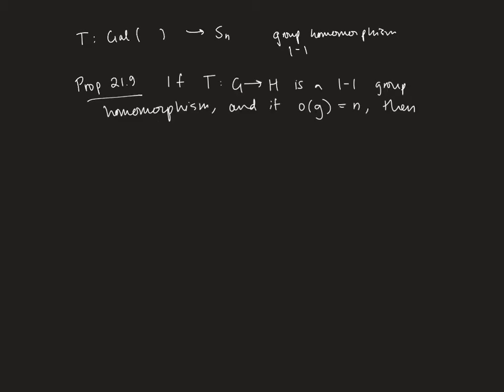So the setup of this proposition is that we've got T, it's a one-to-one group homomorphism from G to H. And we've got this element g in G that has order n. Then what we can conclude is that the order of T(g) is also n. And I'll sketch this proof because it's kind of a cute one.